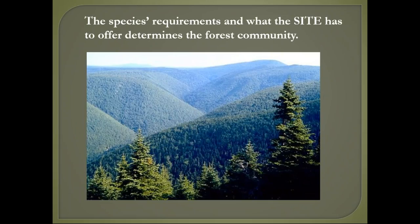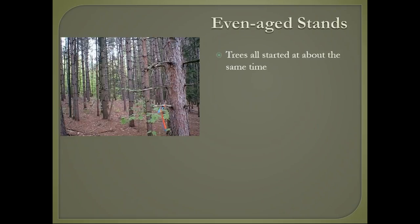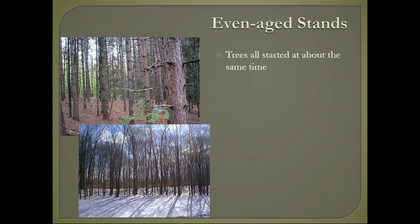Now we'll talk about what ecology really means regarding site—where the many different components of the ecosystem come together to determine what forest community will be found there. We look at two types of forests. Even-aged forests are those where trees all start at about the same time, represented in Vermont by plantations—people planted a lot of trees in the 1950s to stabilize soil because the idea of abandoning farmland was very unpopular at the time.